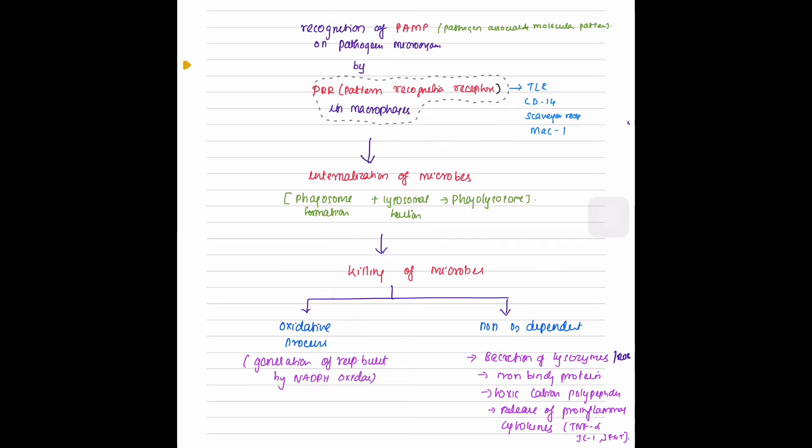The alveolar macrophages have pattern recognition receptors on their surface which include toll-like receptors, CD14 receptor, scavenger receptor, and MAC1 receptor. These receptors are activated once they are recognized by the pathogen-associated molecular pattern on the pathogenic organism. Interplay between the toll-like receptors and the pathogen-associated molecular patterns transmits chemical signals that trigger the process of pathogen engulfment and the secretion of pro-inflammatory cytokines that enhance the local immune response.